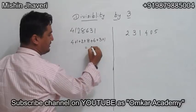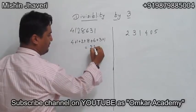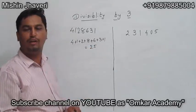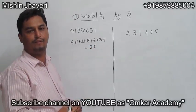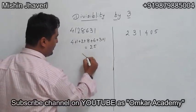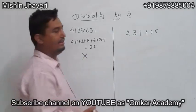The addition is 25. As 25 is not a multiple of 3, so this number is not divisible by 3.